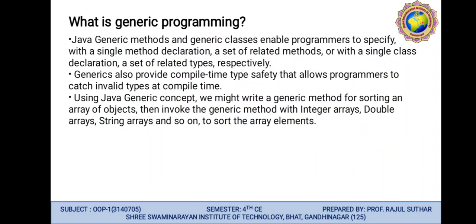What is generic programming? Generics in Java is similar to templates in C++. The idea is to allow types — Integer, String, etc., and user-defined data types — to be parameters to methods, classes, and interfaces. Java generic methods and generic classes enable programmers to specify, with a single declaration, a set of related methods or, with a class declaration, a set of related types. Generics also provide compile-time type safety that allows programmers to catch invalid types at compile time.